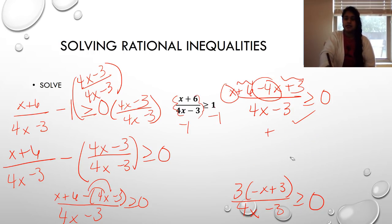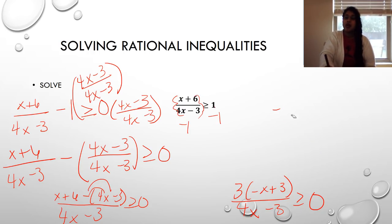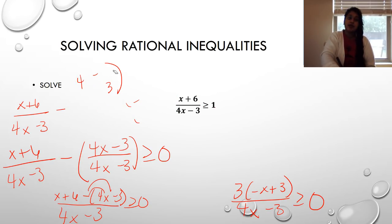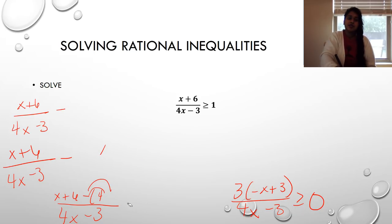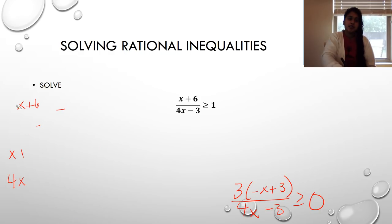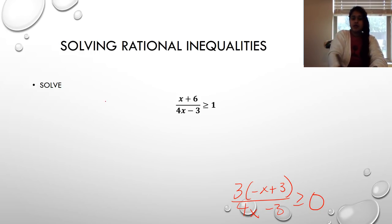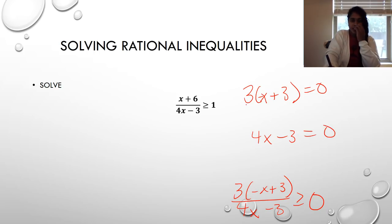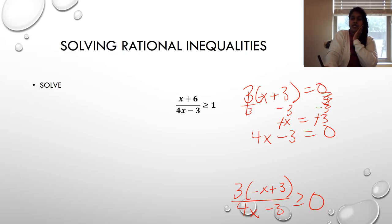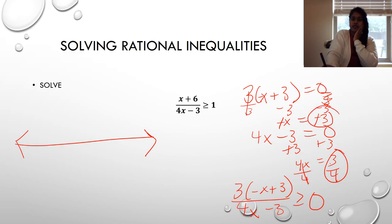Setting all parts equal to zero: numerator 3(−x+3) = 0 gives x = 3. Denominator 4x − 3 = 0 gives x = 3/4. So my two critical values are x = 3/4 and x = 3. I build my sign chart with 3/4 and 3, and pick test values 0, 1, and 4.